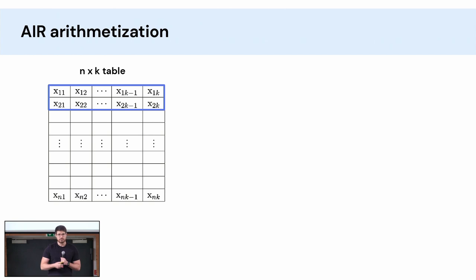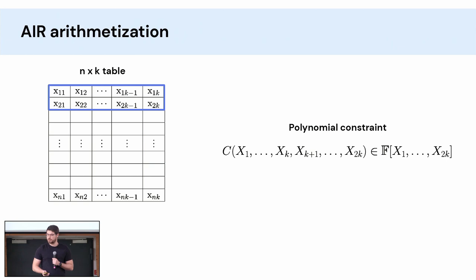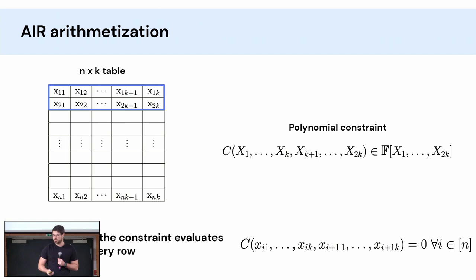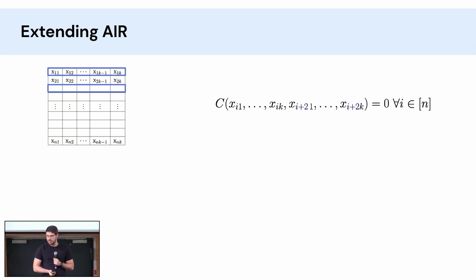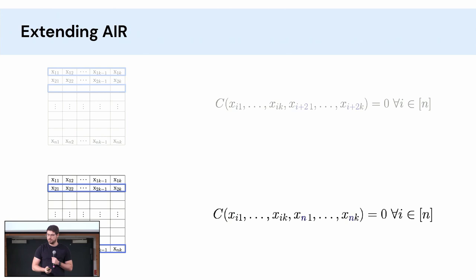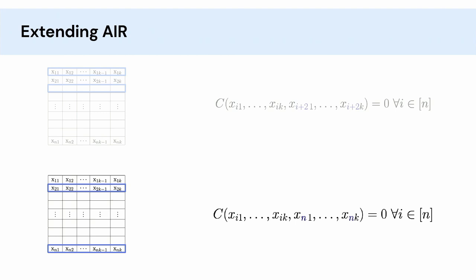So now we can go to AIR. AIR is extremely similar to the previous arithmetization. The only difference is that now we consider windows of two contiguous rows. So now we have a constraint over 2k variables. And we ask that the constraint evaluates to zero when evaluated on the i-th row and the i+1 row. We can easily extend AIR. For example, instead of looking at the next row we could look at the next next row, or the k-th next row. Another extension could be to look up a constant row in the trace. So at every row we look at the i-th row and the n-th row.